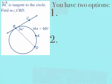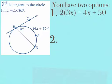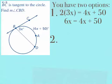Another example: line BC is tangent to the circle. It asks us to find the measure of angle CBD. It tells us that angle CBD is 3x, and the intercepted arc BD is 4x plus 50. I have two options to solve for x. The first option: multiply my angle measure by 2 and set that equal to my arc length. That gives 2 times 3x equals 4x plus 50. So 6x equals 4x plus 50. Subtract 4x from both sides: 2x equals 50, then divide by 2 to get x equals 25.